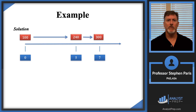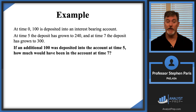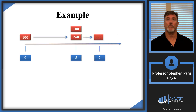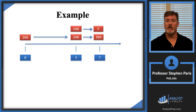Now let's move on to the last sentence, which is the question: if an additional amount of 100 was deposited into the account at time 5, how much would have been in the account at time 7? We'll capture that by putting an extra 100 on top of the 240 at time 5. If I denote what that 100 accumulates to by cap Y, then the answer would be 300 plus cap Y.